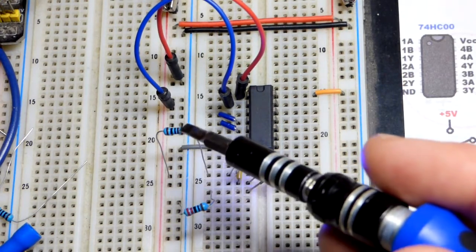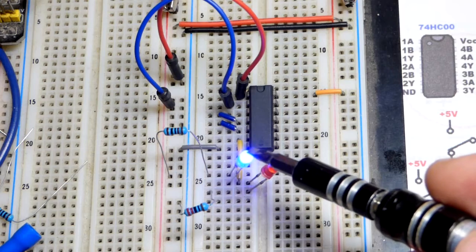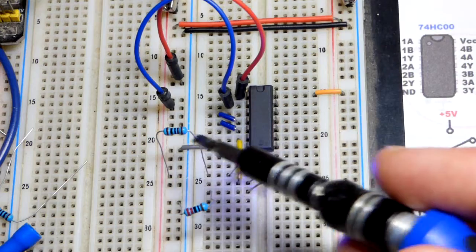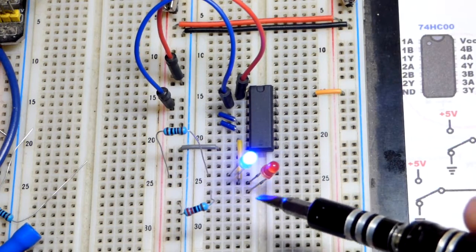As you can see there, it's really bright even though we have four times the resistance there. It does drop also some more voltage than the red LED, so there's even less current going through than what the resistor is setting.